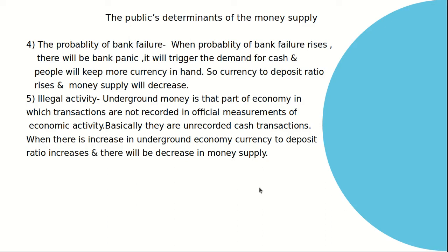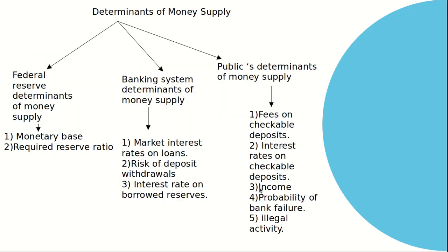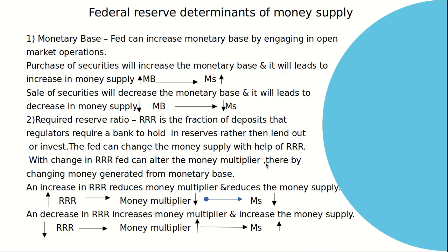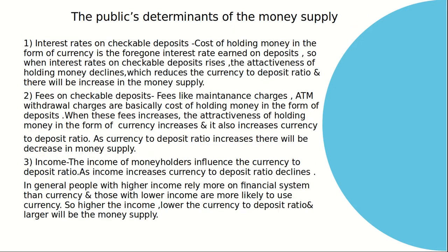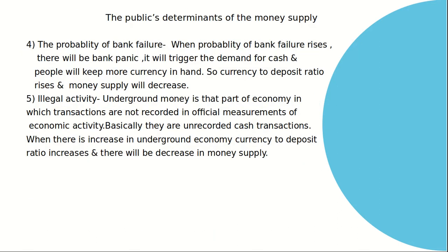So these are the determinants of money supply. A quick revision of what we learned today: Federal Reserve determinants — monetary base and required reserve ratio. Banking system determinants — market interest rates on loans and their connection with excess reserves. Public determinants — interest rates on checkable deposits, fees on checkable deposits, income, probability of bank failure, and illegal activities. We will meet in the next session. Thank you.